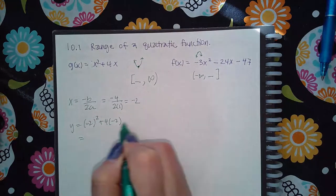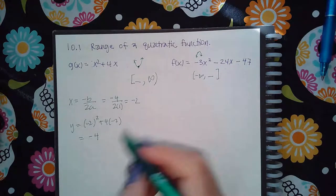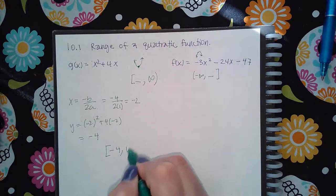So you get four minus eight which is negative four. So then what is the range? It's negative four to infinity.